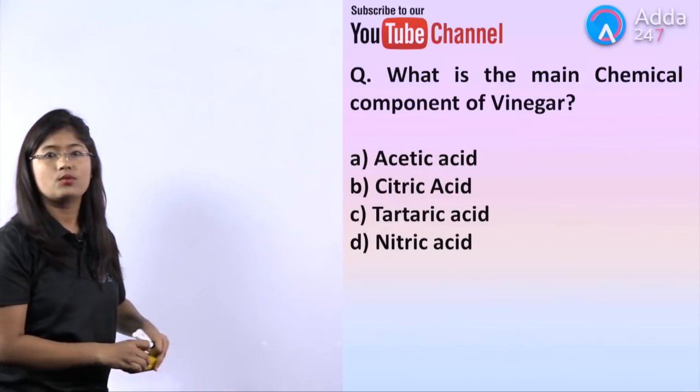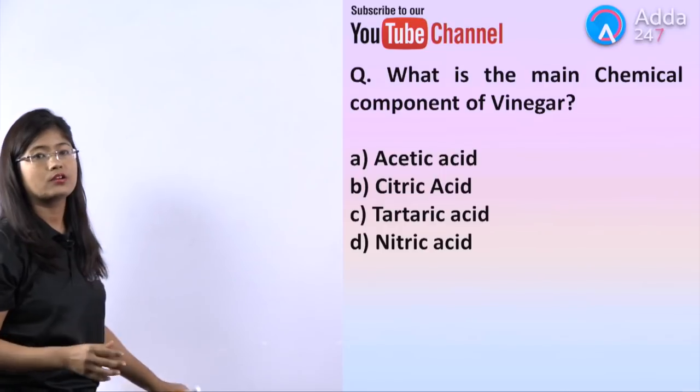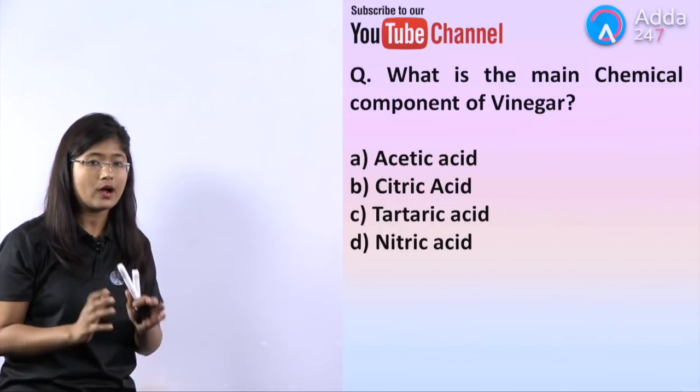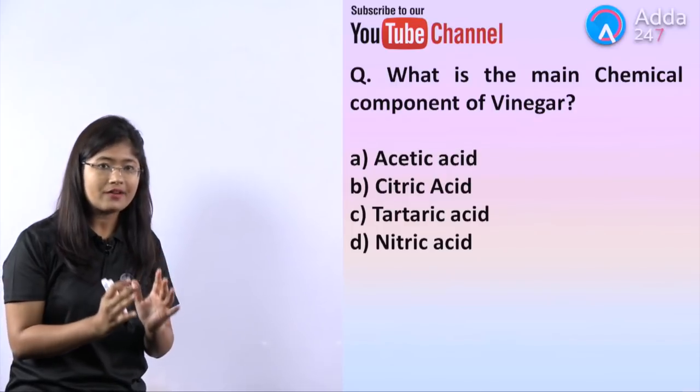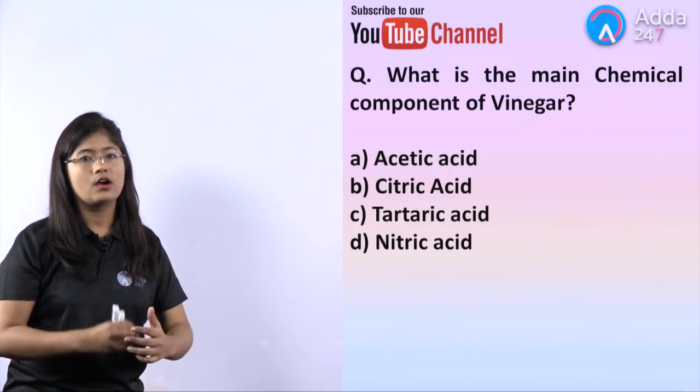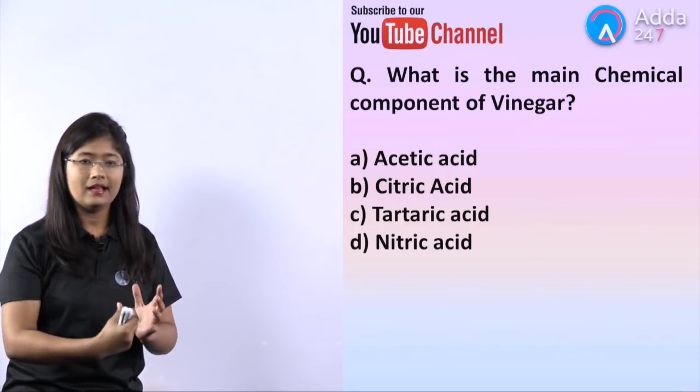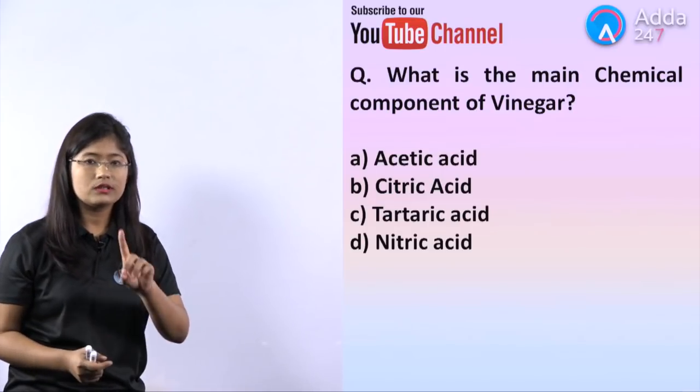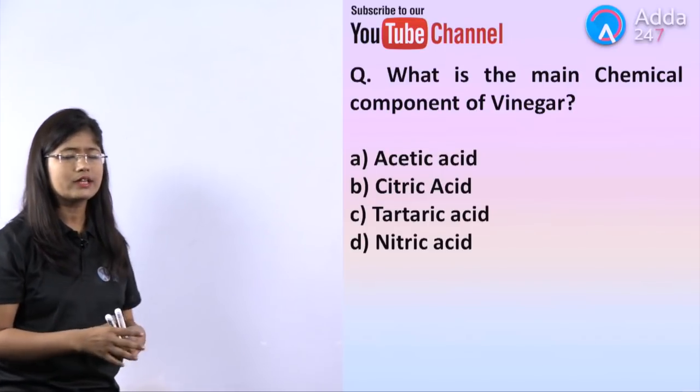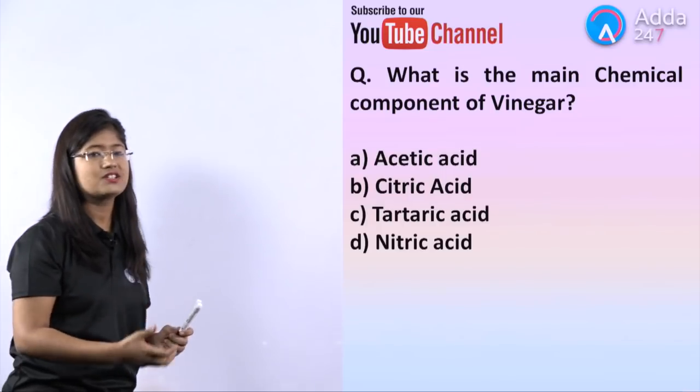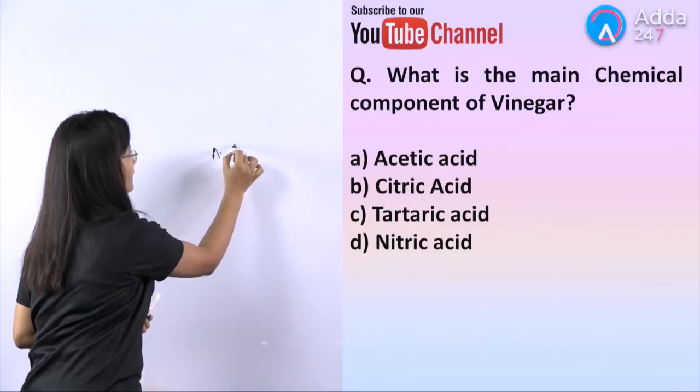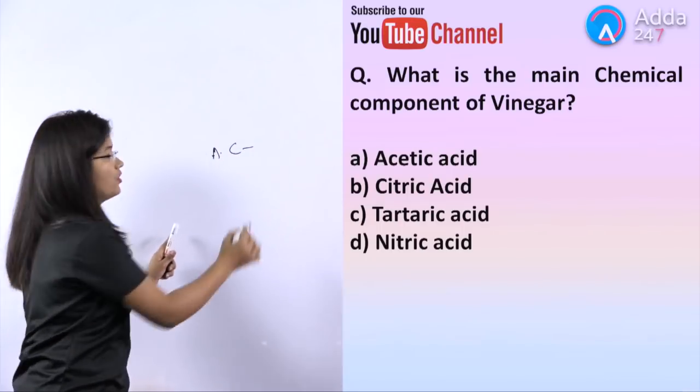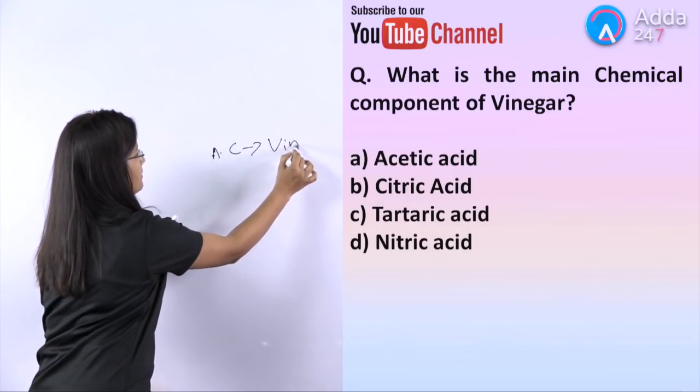The next question is: what is the main chemical component of vinegar? You have to remember uses or names and uses in food. Number one is acetic acid, commonly called vinegar. So acetic acid is for vinegar.